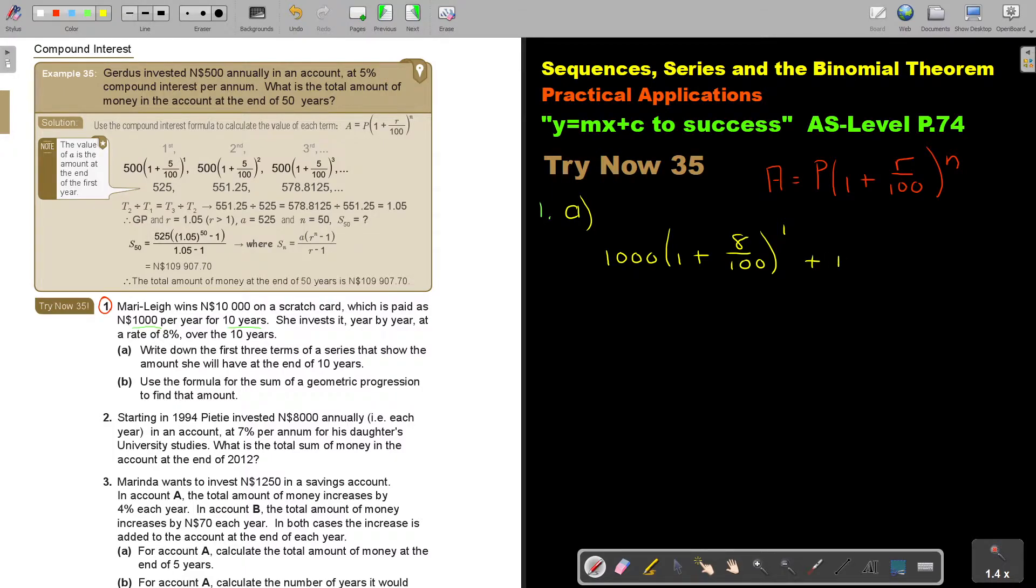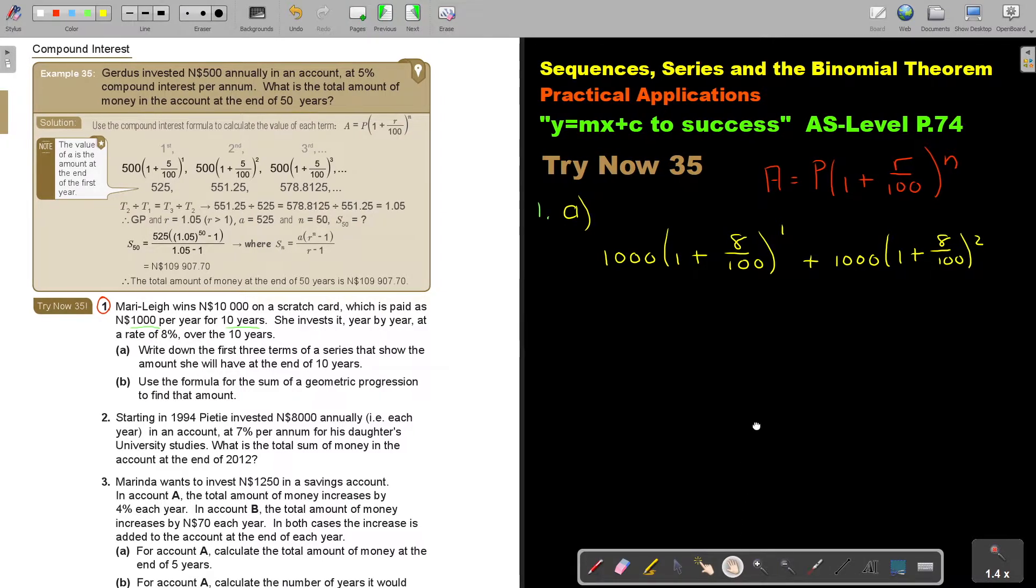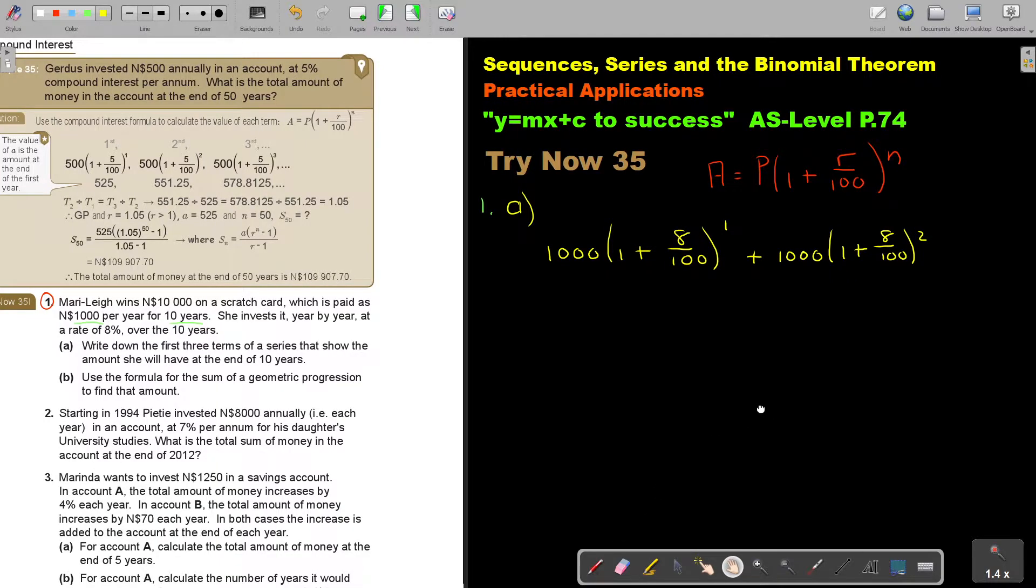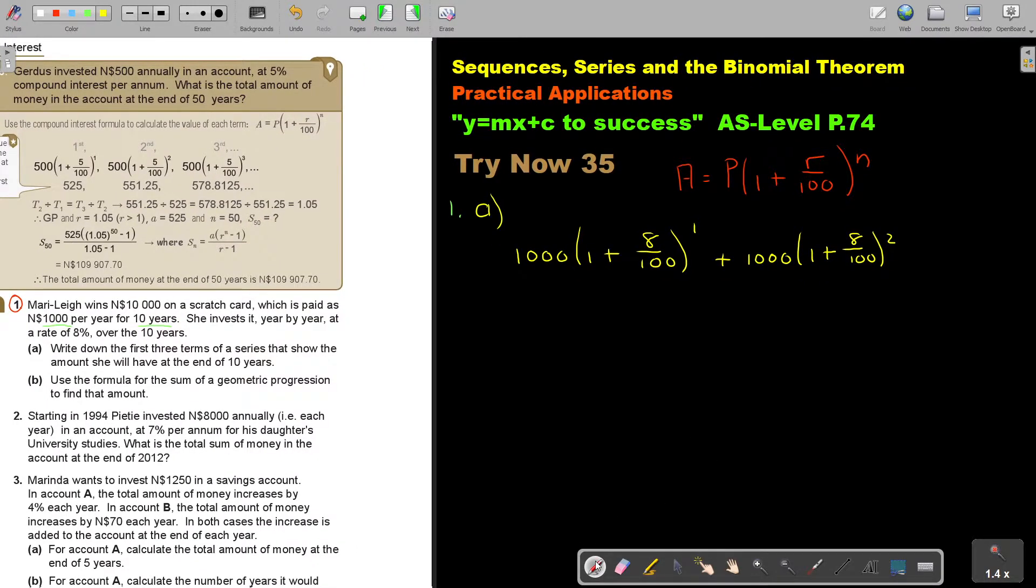So the second year will be also a thousand, 1 plus 8 over 100, and that's to the power of 2. And then just a little bit stronger. And then the third year is a thousand, 1 plus 8 over 100, and that's to the power of 3. So write out the first three terms.